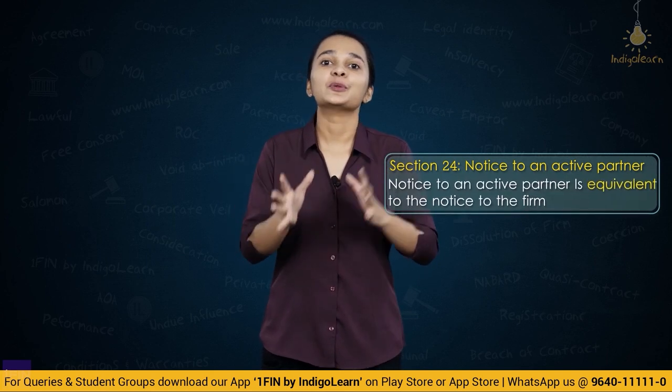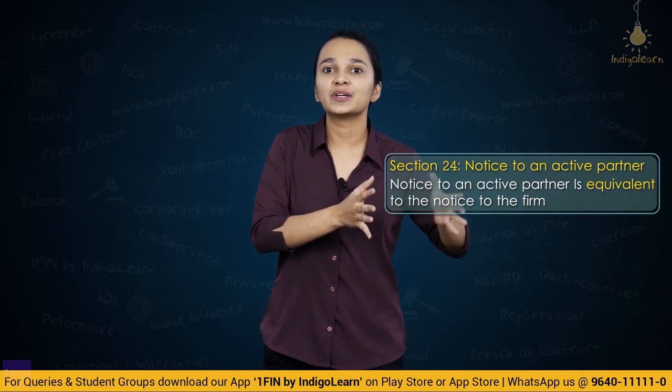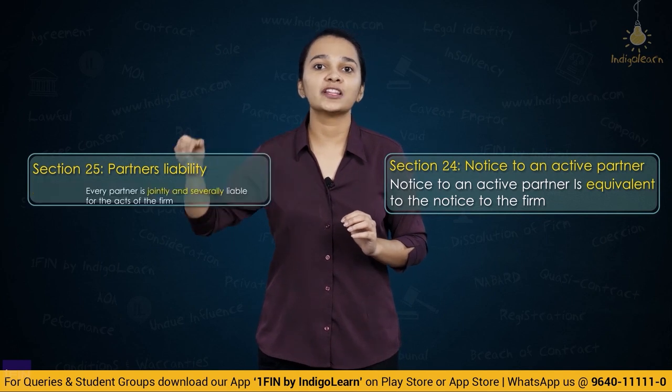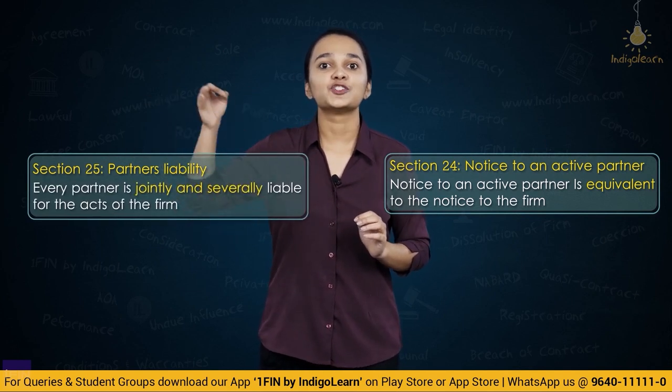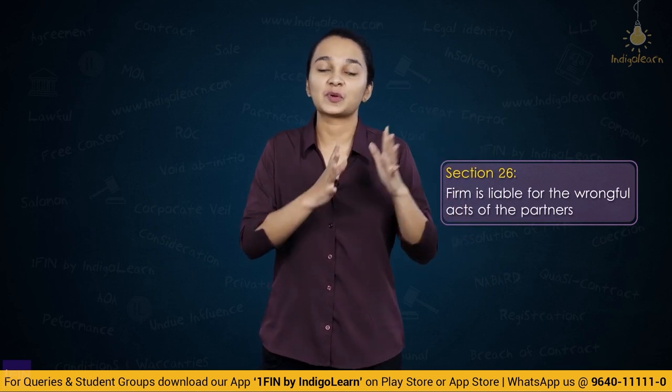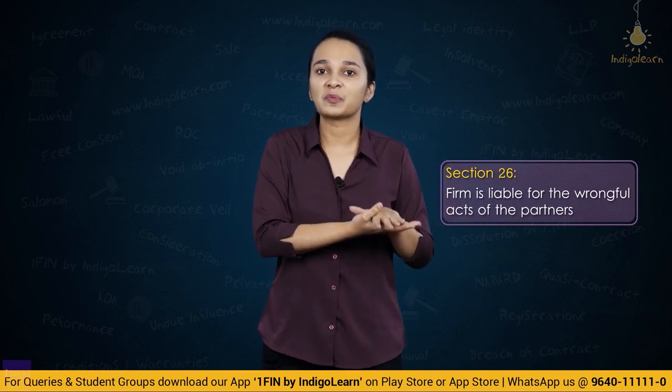Section 24 — notice to an acting partner: if an active partner has knowledge of certain information, it is deemed that all other partners are also aware. Notice to an active partner equals notice to the firm. Section 25 says every partner is jointly and severally liable for all acts of the firm. Section 26 says the firm will be liable for wrongful acts of a partner done in the course of business. Section 27 says if a partner misapplies or misuses money or property of the firm, the firm is bound by those transactions and must make good the losses suffered by the third party.